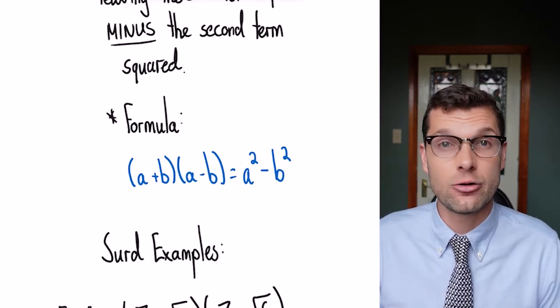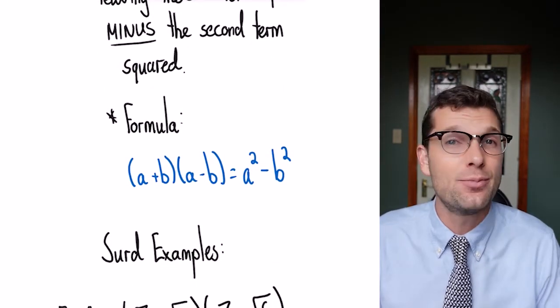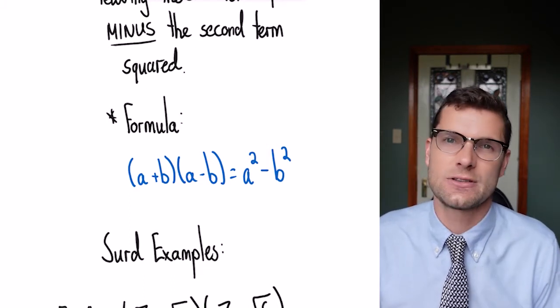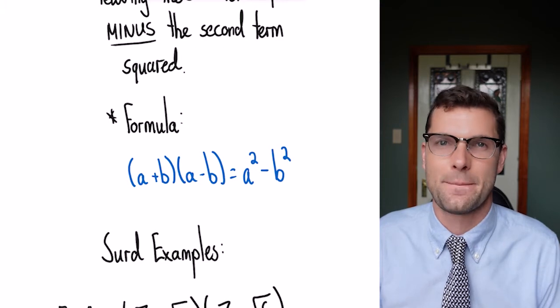The formula in a general sense is this: (a+b)(a-b) always results in a²-b².